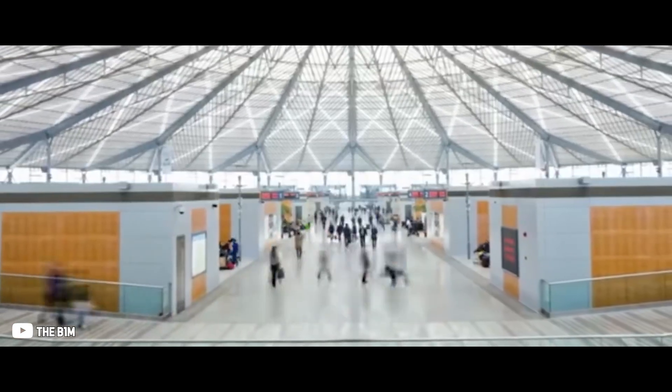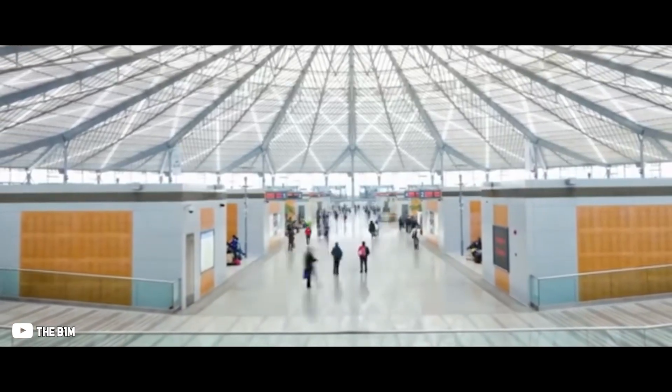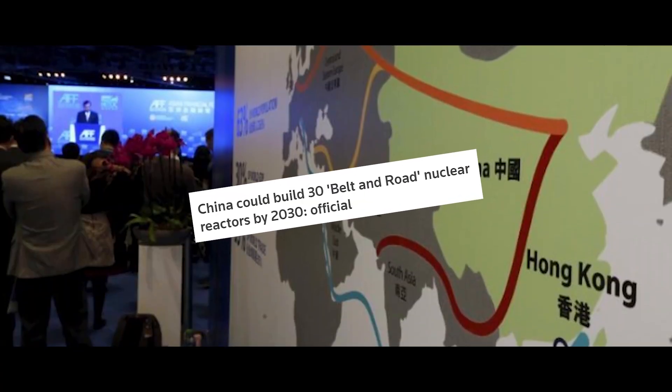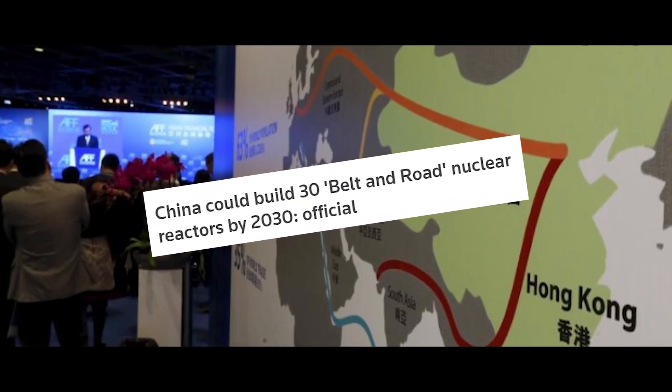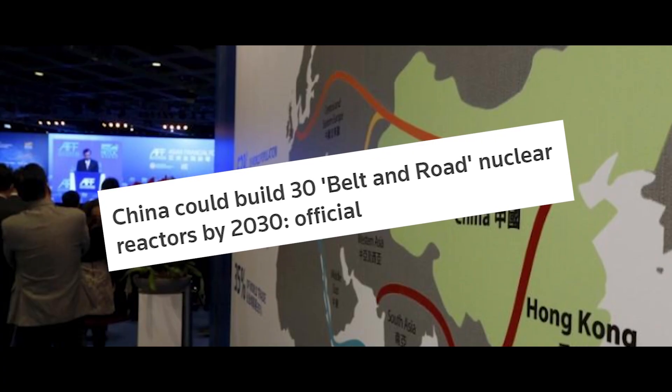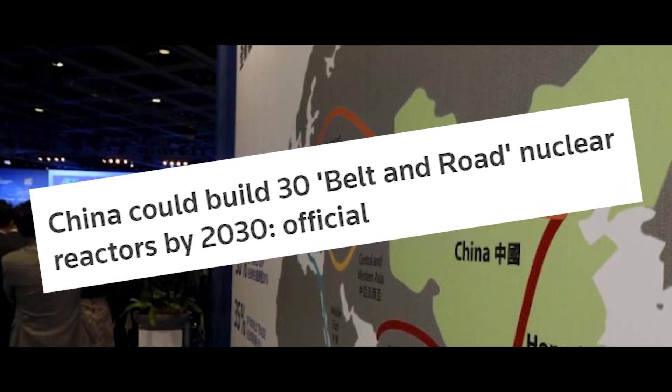A testament to this efficiency is China's high-speed rail project. After deciding on the construction, it was up and running in just a few years. China plans to export its new reactor type along with its Belt and Road project and build 30 new reactors by 2030.